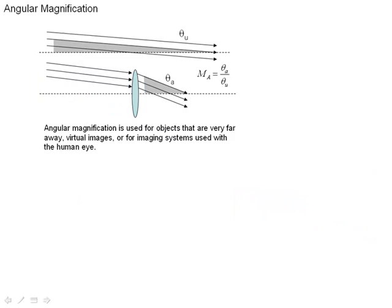Let's talk about one more topic before we quit here, and that's the idea of angular magnification. You can define the magnification not only as the ratio of an image height to an object height as we did previously, but an angular magnification, also called a magnifying power, is the ratio of the angle on the image side of the lens divided by the angle on the object side of the lens, so the angle on the right divided by the angle on the left. And it's used for objects that are very far away, virtual images, or for imaging systems that are used for the human eye.